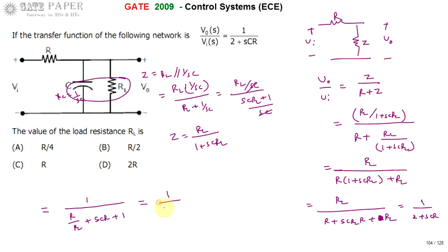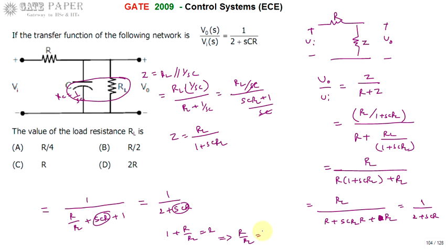This equals 1/(2 + sCR). Comparing the sCR terms, the remaining constant terms must equal 2, so 1 + R/RL = 2, which gives R/RL = 1.